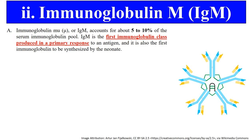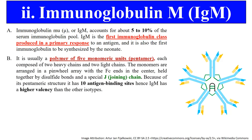The next class of immunoglobulin is IgM. It is the first immunoglobulin class which is produced during the primary response, meaning whenever there is an encounter between an antigen and our immune response, the first immunoglobulin produced is IgM. This IgM may either be a monomer or may exist as a pentamer.